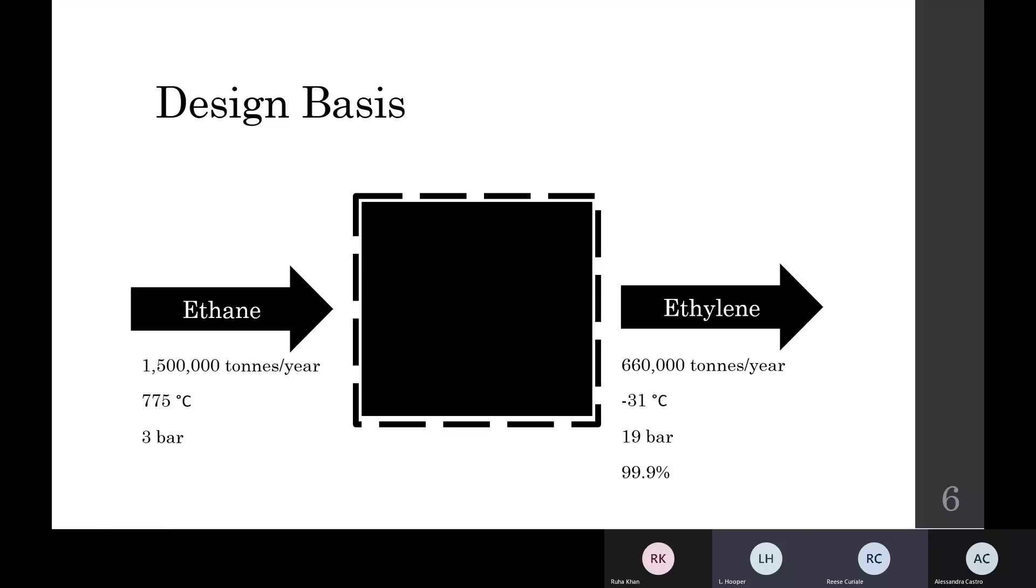The finished ethylene product will produce approximately 660,000 tons per year at a purity greater than 99.9%.